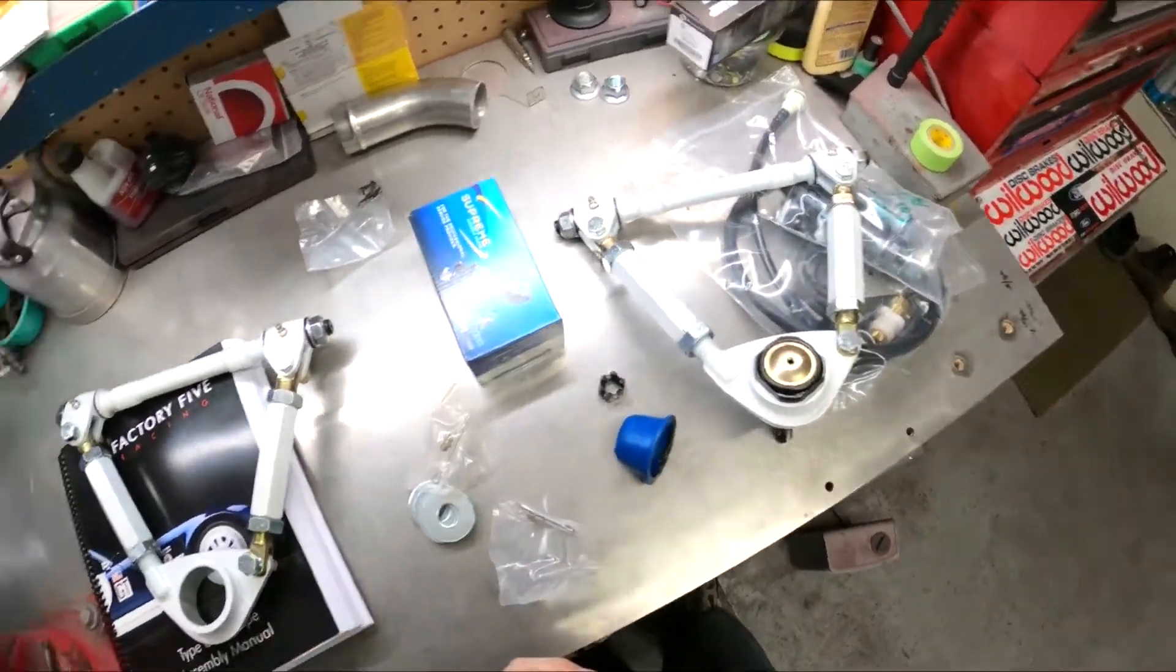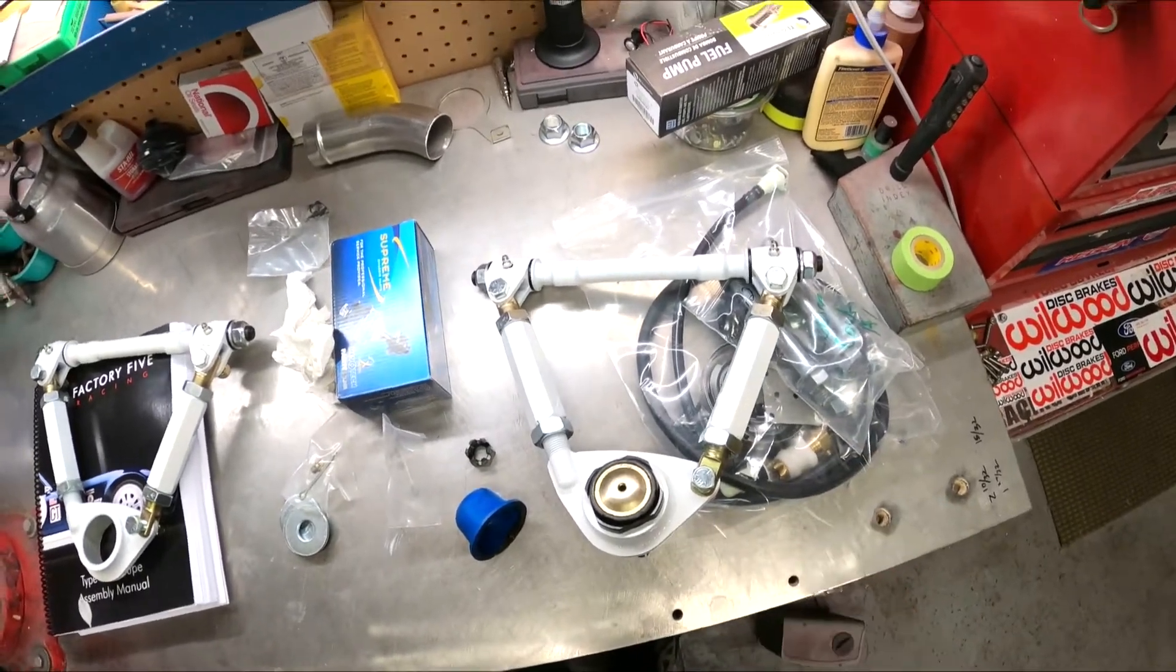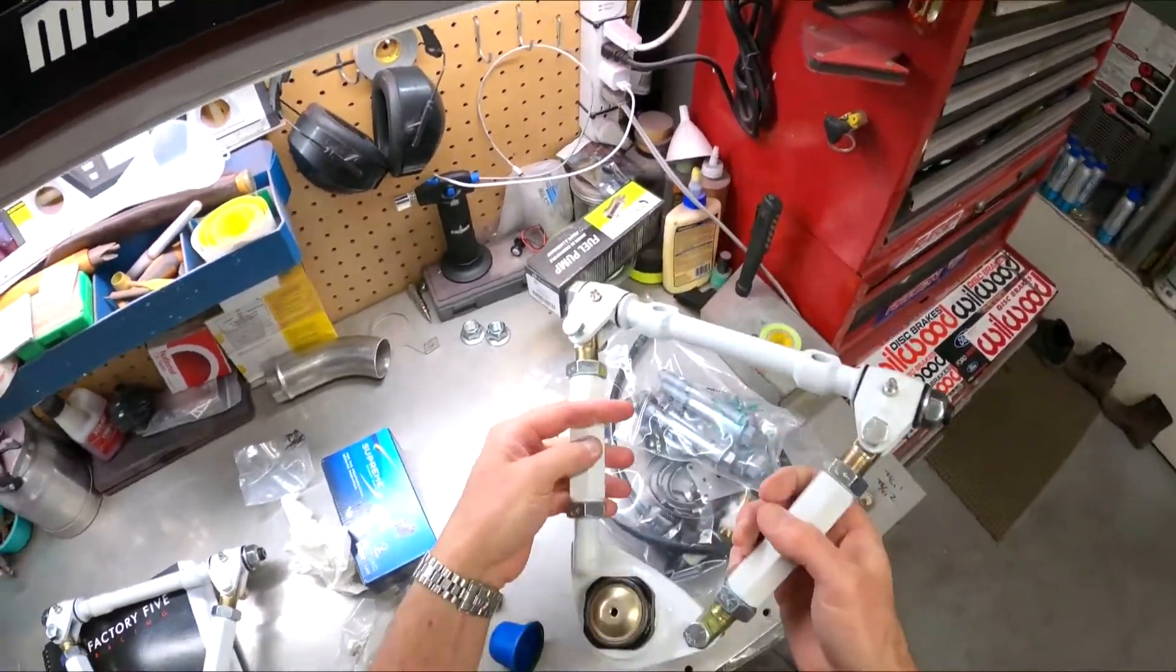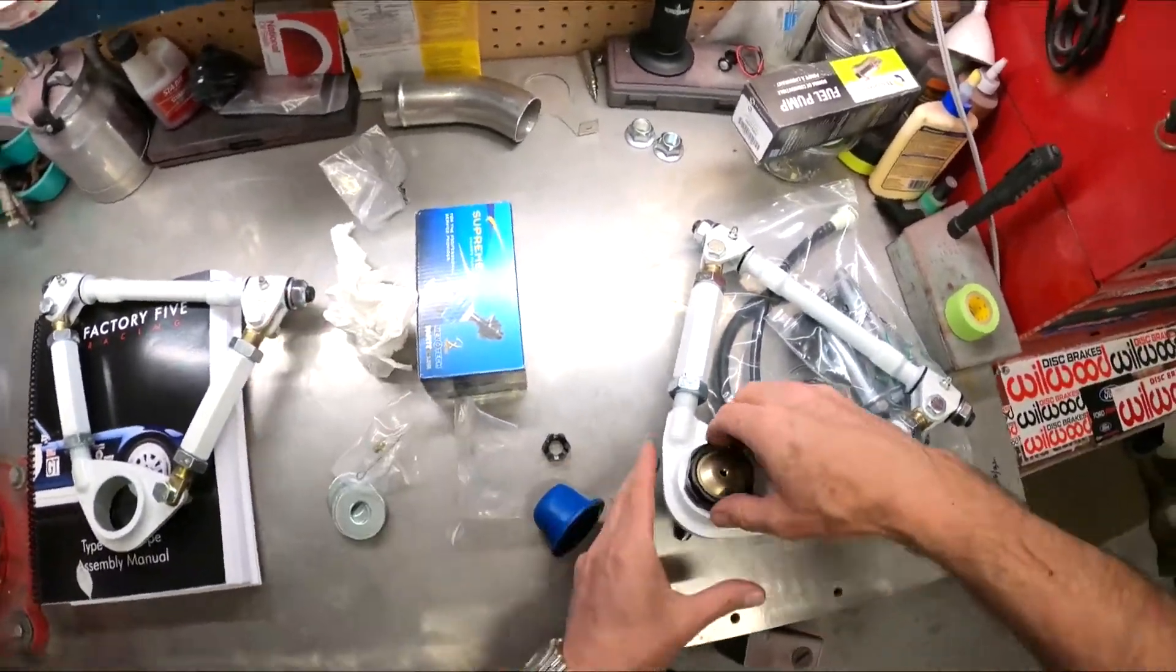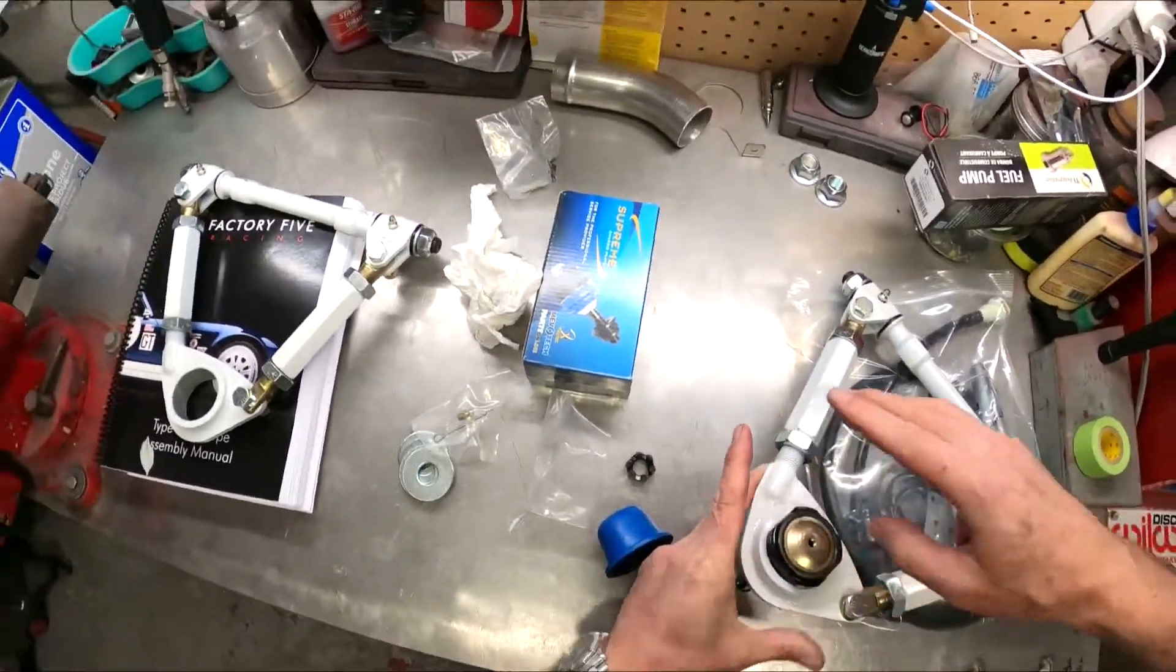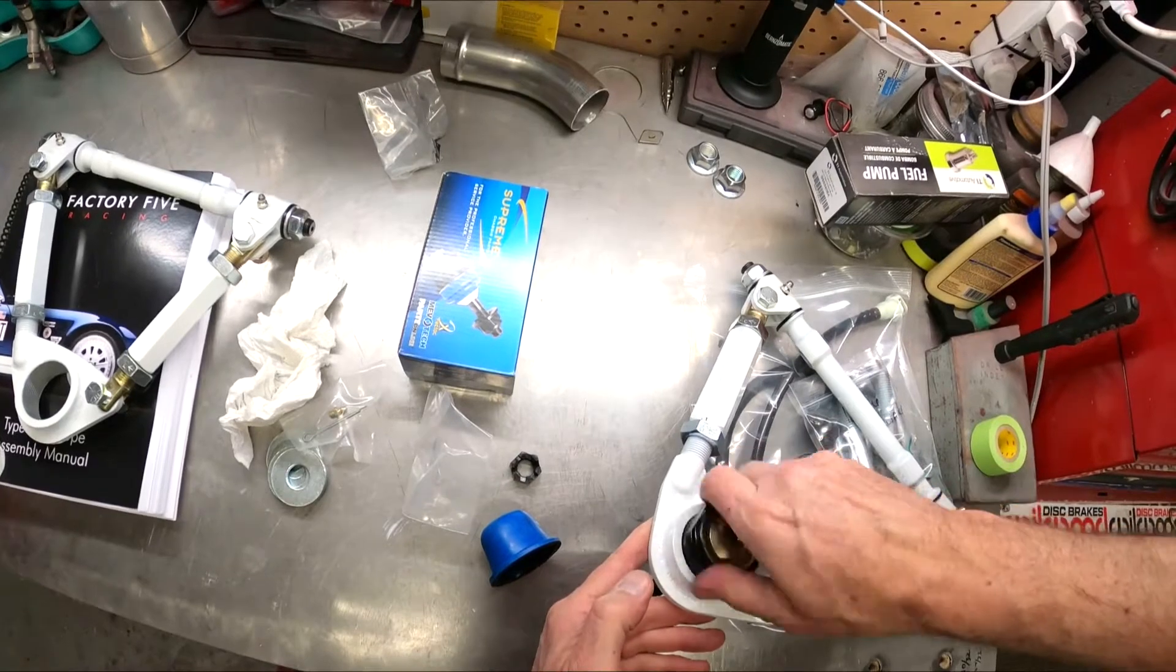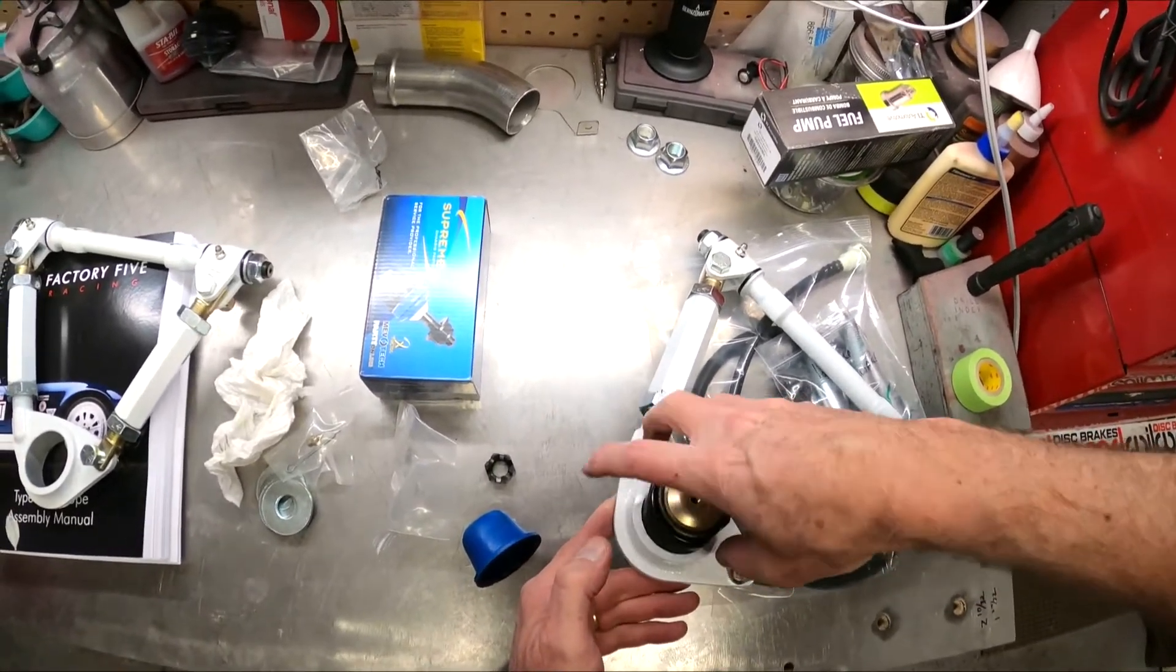I'll put some red Loctite on there and then we're going to screw those down. I want to make sure they go outward, which they do. We'll clean up the inside of those threads, get some red Loctite in there, and then torque these things down. This is what I like about this white base coat clear coat. The clear is really easy to keep clean. You wipe it down just like a car and the white won't show those scratches.